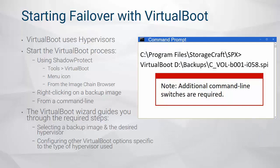The Virtual Boot executable is found in the Program Files folder. Additional command line options are also required, including the hypervisor, disk type, and password. Run Virtual Boot from a command prompt for a full list of the command line options required.